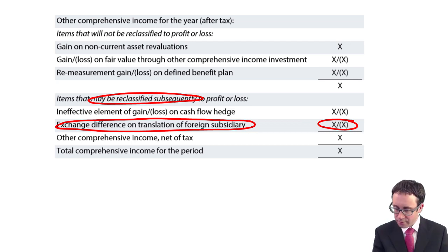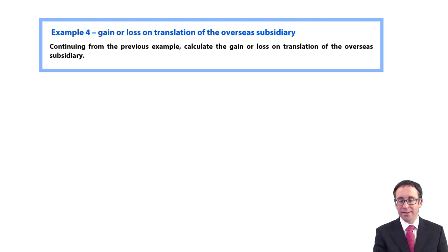Unlike your gains on revaluations, your gains or losses on fair value through OCI, your exchange differences may be reclassified to profit or loss as that exchange difference moves at some point in the future. So let's go through. Have a look at the example. The example says the gain or loss on translation of the overseas subsidiary. Continuing from the previous example that we worked through in stages, work out the gain or loss on the translation of the overseas subsidiary. We've already done it. It's 28.6, but let's do it in a more structured fashion.